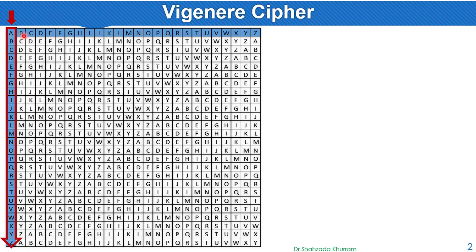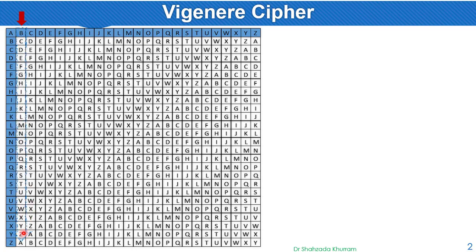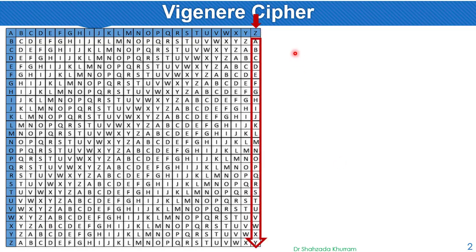Moving to the next line, we start B to Z, and then continue the same pattern all the way through to Z. This is how we build the table, which we will use for Vigenère Cipher encryption.